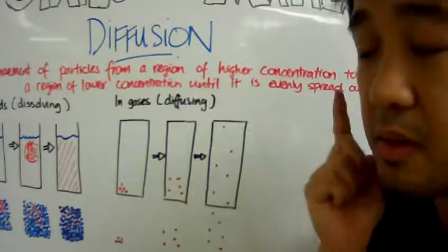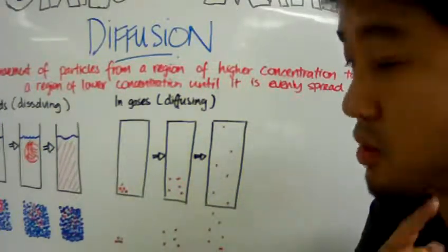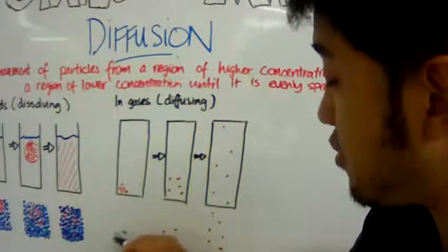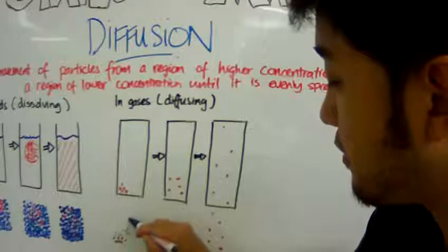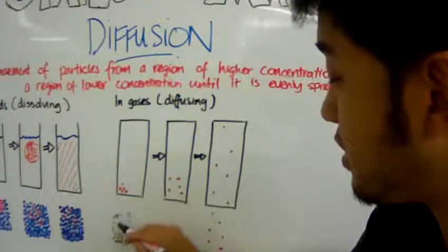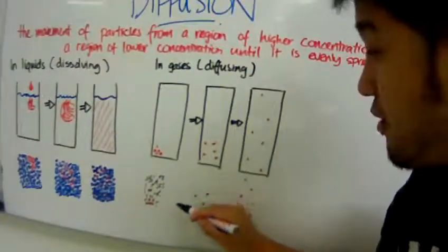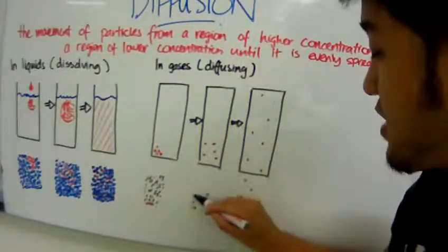These gas particles can be really small and you are not able to notice them. These gas particles can be everywhere in that beaker, like what I'm drawing right now. It can be everywhere in that beaker.